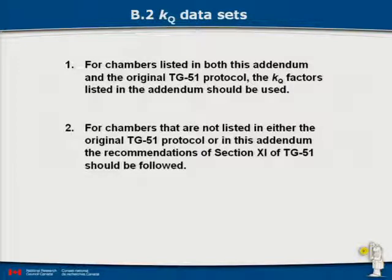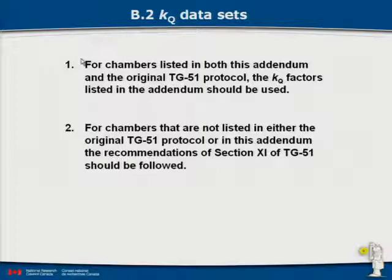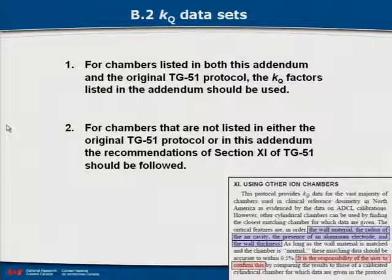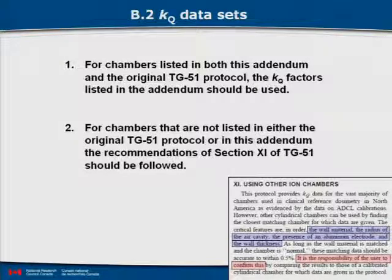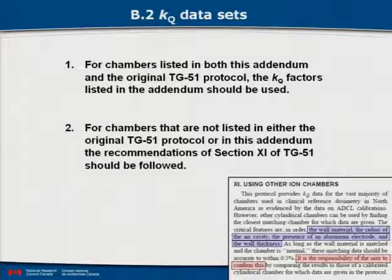Moving on to KQ data sets: TG51 is still valid, but there'll be an addendum with KQ data. The recommendation is that if there's KQ data in the new addendum for your chamber, you should use that data. If you have a chamber not listed in the new addendum or the original document, there is a section in TG51 on how to obtain a KQ data set from those published in the protocol. Importantly, you can't just look it up and pick data — you have to confirm your choice by comparison with a listed chamber. The shorthand is: get a chamber that's listed.